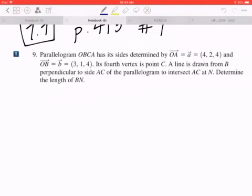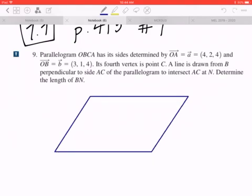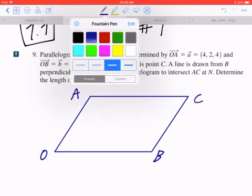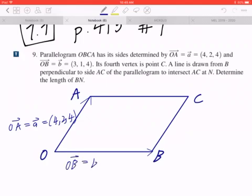Step 1: Draw a diagram. So the question says it's going to be a parallelogram which looks something like this and you can label this in the exact same sequence: O, B, C, and A. Now in the given, vector OA equals a which equals (4,2,4). So draw the arrow, OA equals a equals (4,2,4). Likewise, if you look at OB which equals b, that equals (3,1,4).